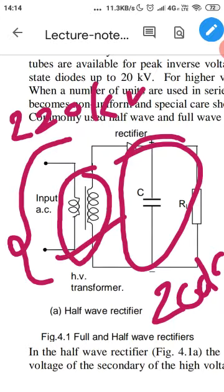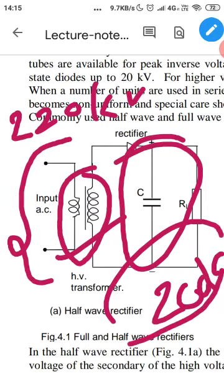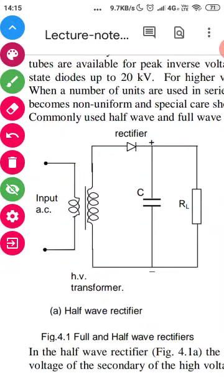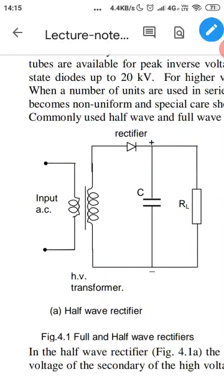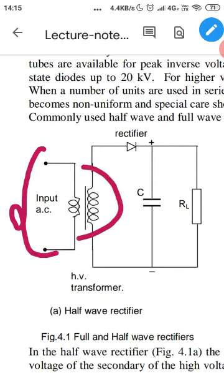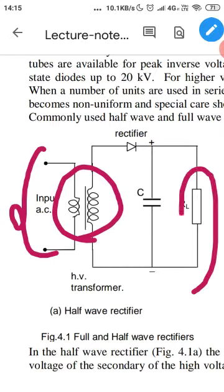With a step-up transformer, we can take a lower input voltage and get a higher output voltage. In ideal conditions, some losses must be considered. Based on the voltage rating of the transformer, a step-down transformer reduces input voltage to a lower output voltage.